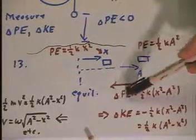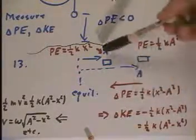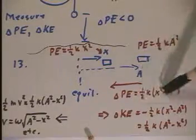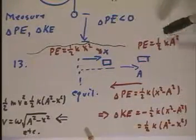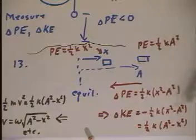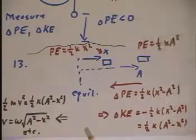And we see that the potential energy change, of course, is potential energy here minus here. One-half kx squared minus one-half ka squared factor out to one-half k. And we get this expression.